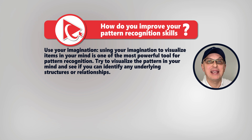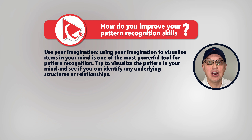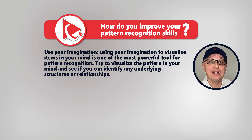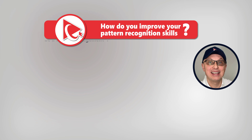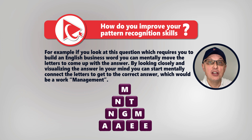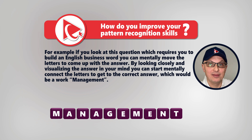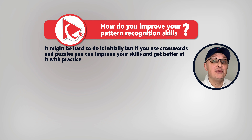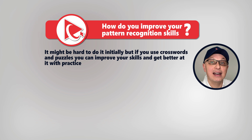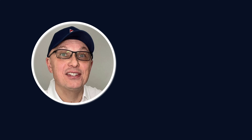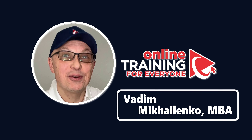One of the key ways to improve your pattern recognition skills is to use your imagination. You can use imagination to visualize items in your mind — it's one of the most powerful techniques. In this example, you are required to build an English business word using all the letters only once. If you look closely and try to visualize and build the answer in your mind, you can mentally connect the letters and get to the correct answer, which is the word 'management.' It might be hard initially, but if you do crosswords and puzzles you can improve your skills with practice. Please share any other interesting techniques in comments.